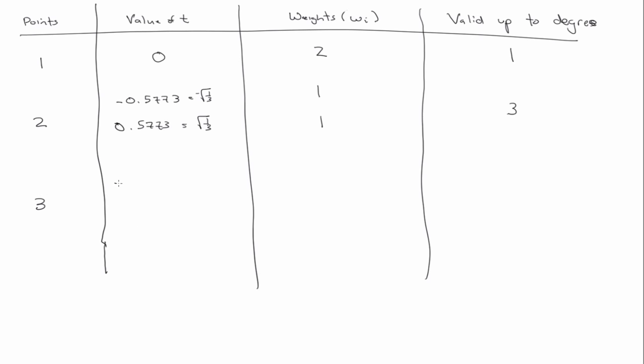So, if we have three points, then the values where you evaluate the function are minus point seven seven four five nine, zero point zero, and point seven seven four five nine. The weights are then point five five five five, point eight eight eight eight, and point five five five five. And this three-point integration scheme is valid for polynomials up to order five.